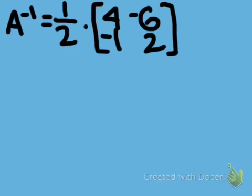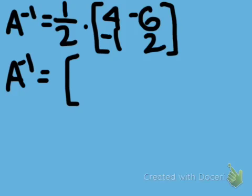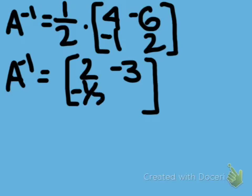Now we're just going to multiply this out, so you get A inverse equals 2, negative 3, negative 1 half, and 1. And that is your inverse of A.